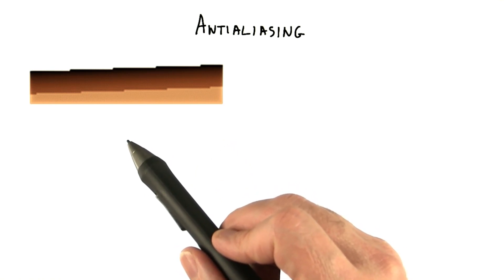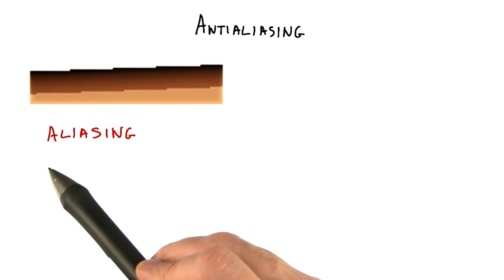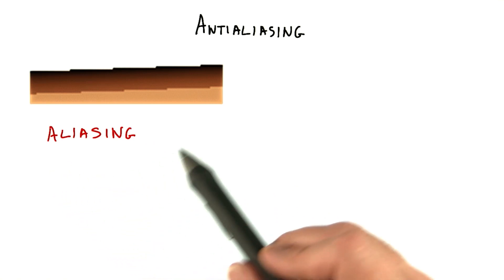This can give some fairly bad results, as edges of triangles will either be considered to fully cover a pixel, or not cover it at all. The binary nature of this process causes what's called aliasing, giving a ragged look to edges.